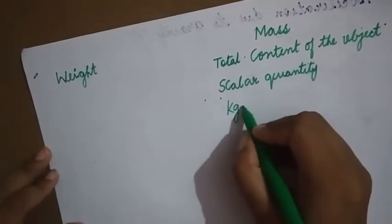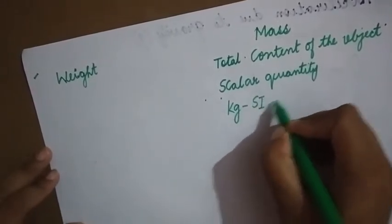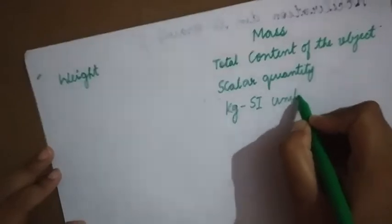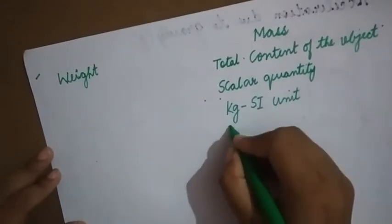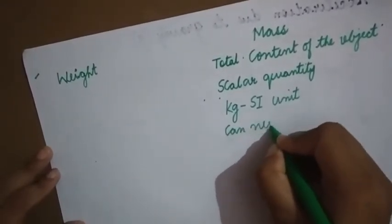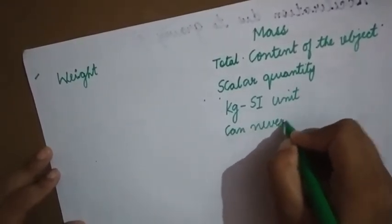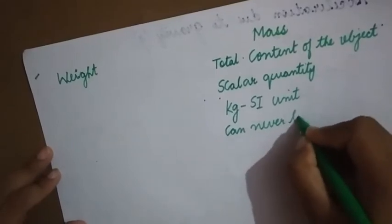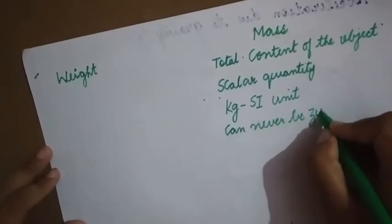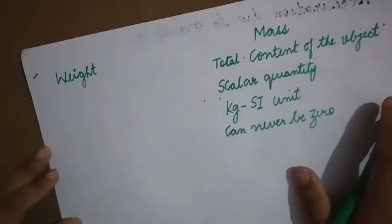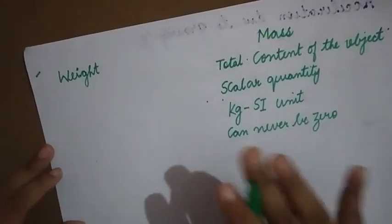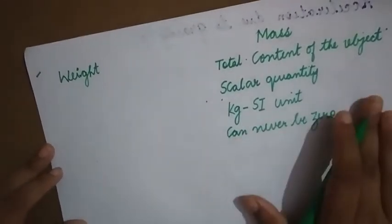The SI unit of mass is kg. And mass can never be 0. Even if you are on the moon or any other planet, the mass is the same. Mass will not change.